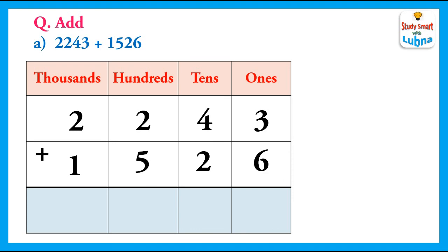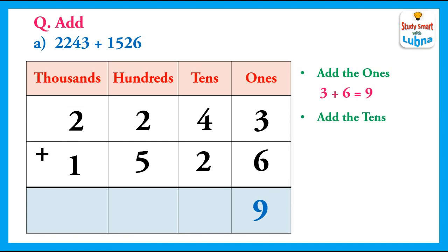So, what is the first step? We will add the ones. So, 3 plus 6 equal to 9. We write 9 in the ones column. Now, we will add the tens. 4 plus 2 equal to 6. So, we will write 6 in the tens column.